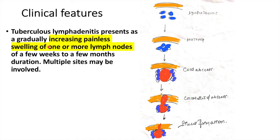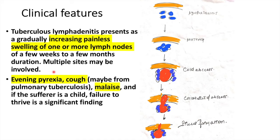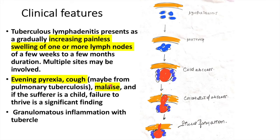The clinical features include an increasing, painless swelling of one or more lymph nodes associated with evening pyrexia, cough when there is involvement of pulmonary tuberculosis, and malaise. We also see failure to thrive if the sufferer is a child.